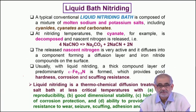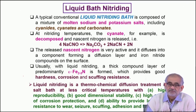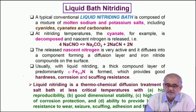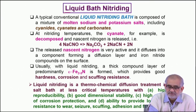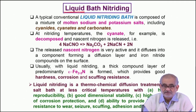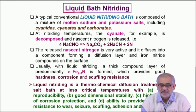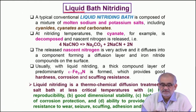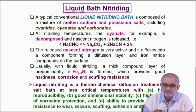In the previous lecture we discussed gas nitriding, having nitrogen in the gaseous atmosphere. Today we are going to discuss liquid bath nitriding. We essentially have a salt bath in the molten state, and we immerse the workpiece into the bath and allow the nitrogen to be liberated from the salts, then get adsorbed and gradually diffuse into the bulk of the solid from the surface.